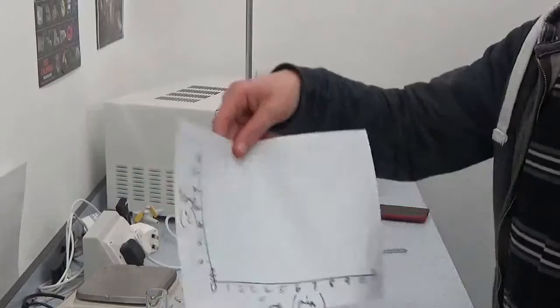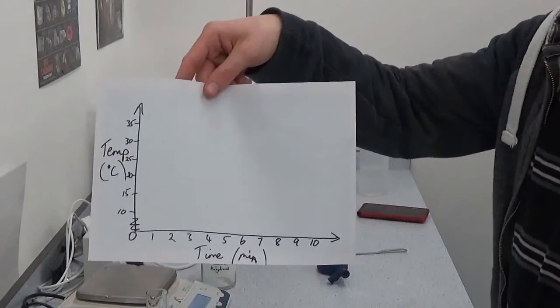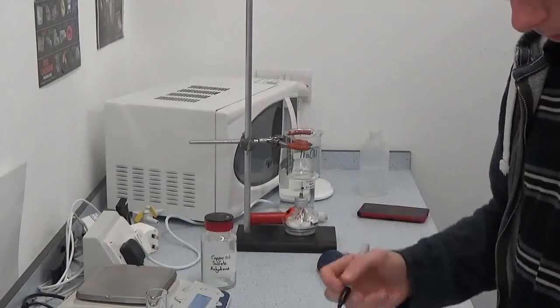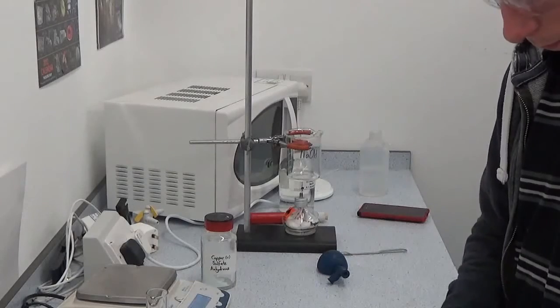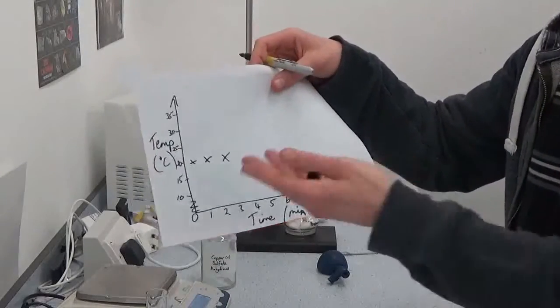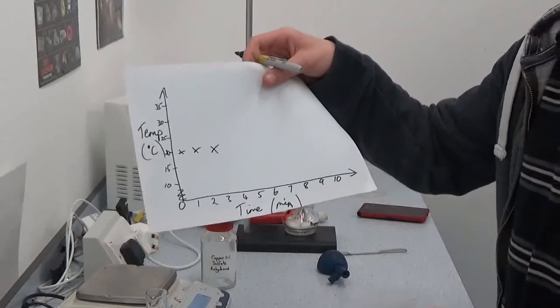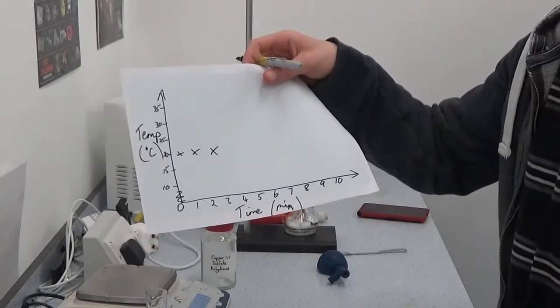So what you should end up with is if we plot a graph like this. First three minutes temperature should be fairly stable since you're just recording the temperature of water in a room.